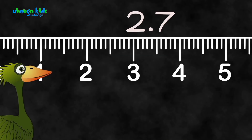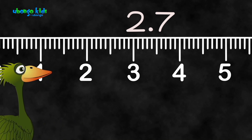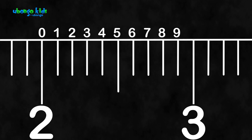In order to get there, you have to start from 2 and then take small steps along the number line. Let's count them up: 2.1, 2.2, 2.3, 2.4.